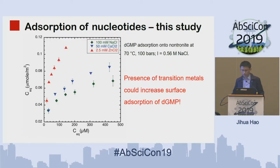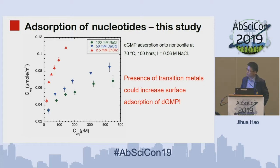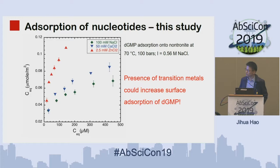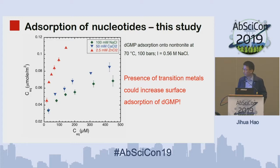The previous results seem boring, but when we add a trace amount of transition metals — for example, zinc chloride — into the system, it shows very interesting results. The addition of transition metals, which are enriched in modern hydrothermal fluid, can greatly elevate the absorption of nucleotides onto the mineral surface. This is very relevant to the early Earth system and also modern exoplanets.